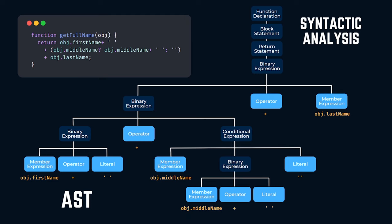How does the AST help the parser check whether the written program is correct? The parser checks the syntactic rules starting from the leaf nodes of the tree. For example, we have a concatenation operation between two strings — that's valid according to JavaScript syntax rules. But if instead we had a multiplication operator, it wouldn't work because multiplication can't be done with two strings, and execution would stop with an error.